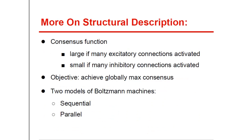Boltzmann machines have a consensus function, which is either large if many excitatory connections are activated, or small if many inhibitory connections are activated. The objective of the Boltzmann machine is to achieve a globally maximal configuration, also known as maximum consensus. There are two models of Boltzmann machines: sequential Boltzmann machines, where units are allowed to change states only one at a time, and parallel Boltzmann machines, where units are allowed to change states simultaneously.